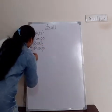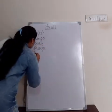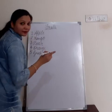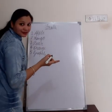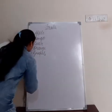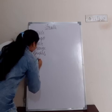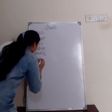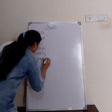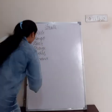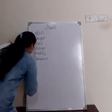Number five. G-R-A-P-E-S, grapes. Grapes means angoor. Number six. B-A-N-A-N-A, banana. Banana means kela. Number seven.